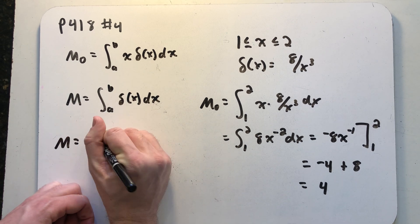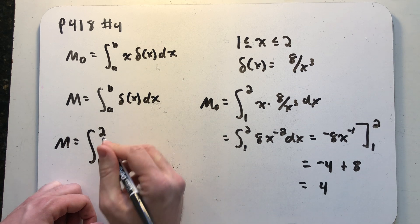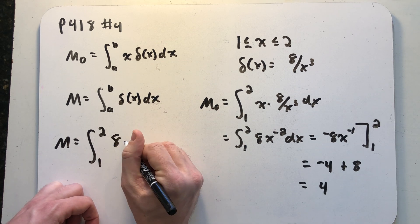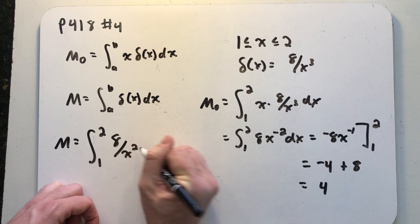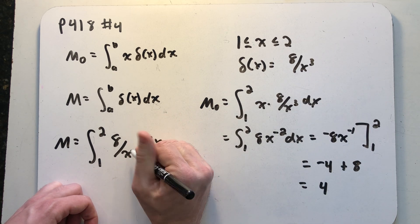Well let's find the total mass of the system now. So again we're going to integrate from 1 to 2, this time of the density function, just the density function. 8x squared, excuse me, 8x cubed dx.